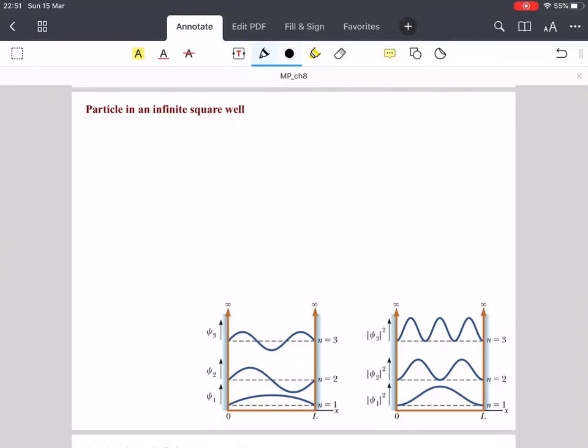Here we look at a standard example of applying the time-independent Schrödinger equation to a situation where we have an infinite square potential well with a particle trapped inside of it.